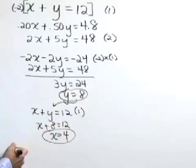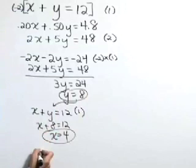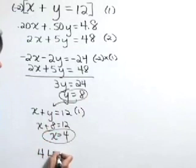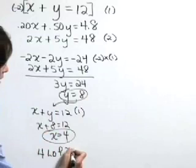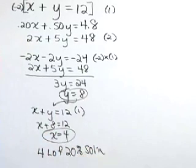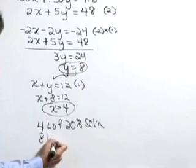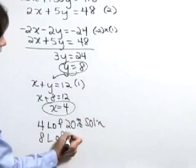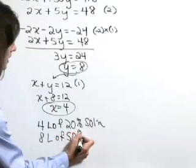Let's clearly state our answer now. We know that we're going to need 4 liters of the 20% solution and 8 liters of the 50% solution.